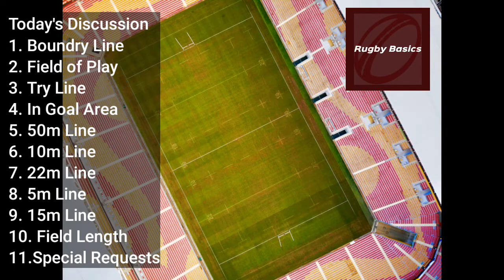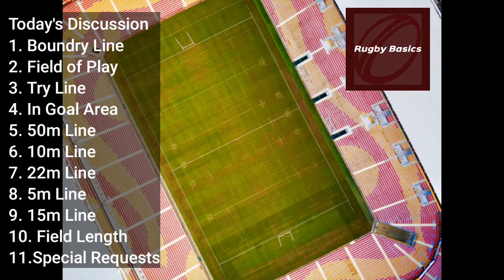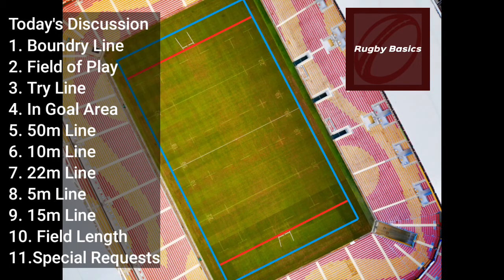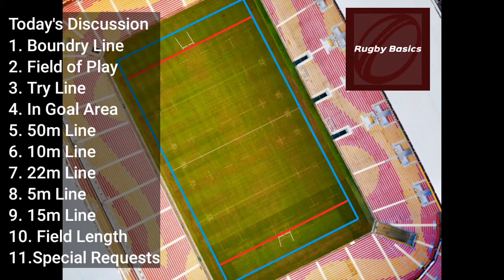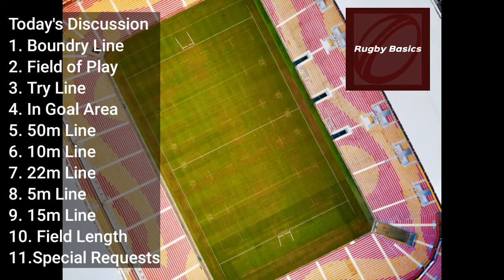The in-goal area is where you score a try — these boxes here are where you score. If the ball goes past the dead-ball line it will be called dead and the game has to be restarted. The try line is the whole goal of rugby — you need to get the ball over the try line to score points and win matches. It is basically the line you have to get the ball past in order to score tries.